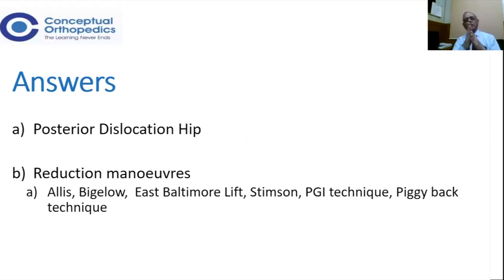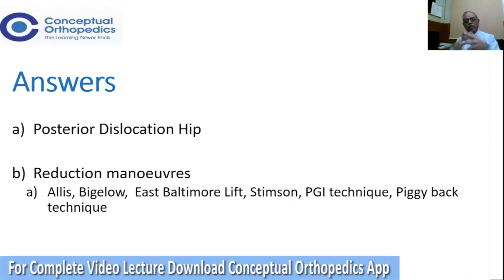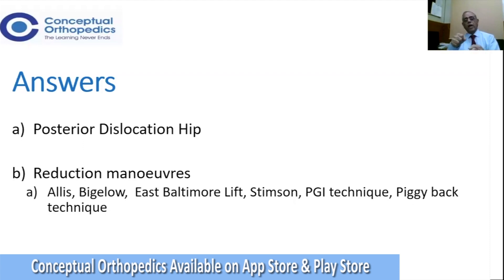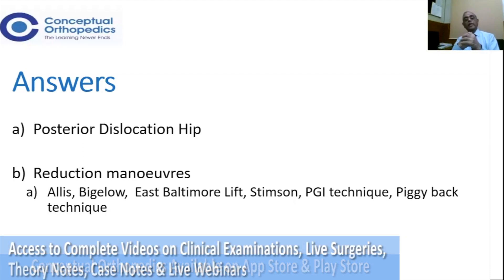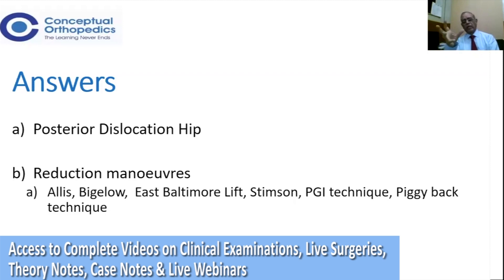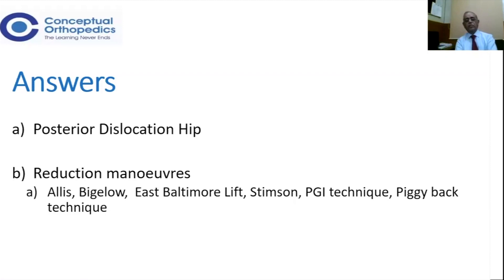Coming to the reduction maneuvers: the classical reduction which all the books describe is the Alley's method, where you put the patient supine at 90 degrees of flexion, and with an assistant pushing the pelvis down, you pull up, rotate, and slowly externally rotate it — and you hear a classical click. Historically, if you are not able to reduce, that means there is a rent in the capsule or in the short muscles of the hip.